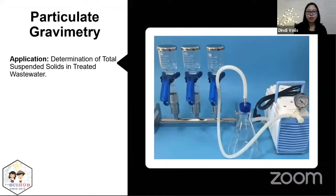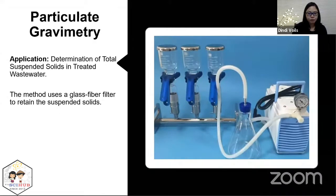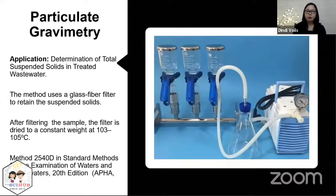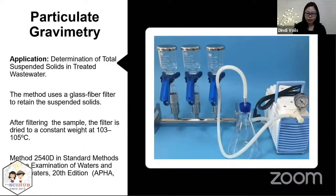One common application of particulate gravimetry is the determination of total suspended solids in treated wastewater. In this method, you use a glass fiber filter to retain your suspended solids, then after filtration you dry it to a constant weight at 103 to 105 degrees Celsius. This method was published by APHA — it's called Method 2540D in Standard Methods for the Examination of Waters and Wastewaters. Normally, because you have many samples, it's impractical to have one suction filtration setup, so you would use a manifold with multiple suction filtration setups attached to a vacuum pump.